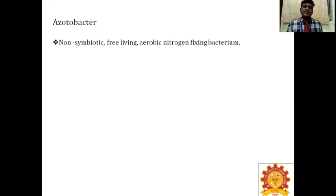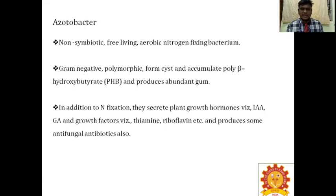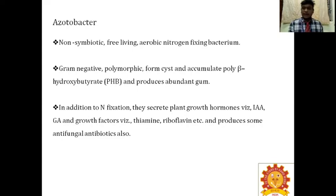Next is Azotobacter. It is non-symbiotic, free-living, aerobic, nitrogen-fixing bacterium. It is gram-negative and also polymorphic — it doesn't have a fixed morphological character; it may be rod-shaped or oval-shaped, forms cysts, and accumulates polyhydroxybutyrate, producing abundant gum. This biofertilizer is the only one that produces gum. In addition to nitrogen fixation, it secretes plant growth hormones — IAA (indole acetic acid), gibberellic acid — and growth factors such as thiamine and riboflavin, and also produces antifungal antibiotics.